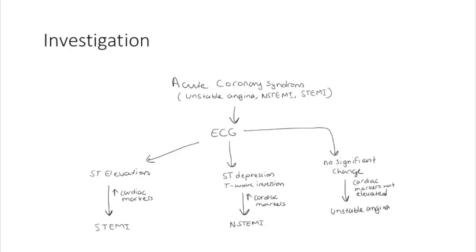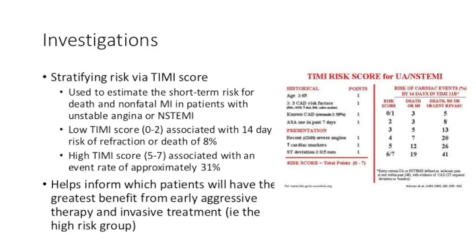In terms of approach to working up a patient with an acute coronary syndrome, the best thing to do first is an ECG. If you see ST elevations with elevated cardiac markers, the patient has a STEMI. If you see ST depression with T-wave inversions and increased cardiac markers, they have a non-ST elevated MI. If there are no significant ECG changes and no elevated cardiac markers, they are considered to have unstable angina. Patients presenting with non-STEMI and unstable angina are also at increased risk of re-infarction, and the TIMI risk score can be used to stratify patients.